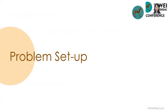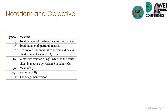Now let's formulate the problem mathematically. Here is a table of notations we will use throughout the paper. J denotes the total number of treatment variants or choices. K denotes the total number of key metrics. C_i is the i-th cohort. J_k is a vectorized version of u_ijk, which is the causal effect in metric k by treatment variant j in cohort C_i. Mu_k and sigma_k squared are the mean and variance of u_k. X is the assignment vector, which is also the final treatment allocation we want to solve for.